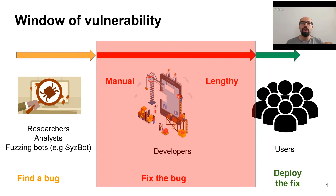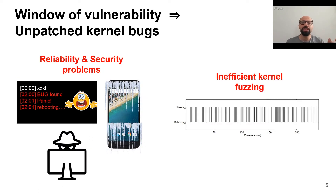they fix the bug and release a fixing patch for the users to deploy. However, this process is mainly manual and it takes a lot of time. Unpatched kernel bugs can cause reliability and security problems. In addition, they can damage the kernel fuzzing performance, wasting the fuzzer's resources by getting triggered again and again.